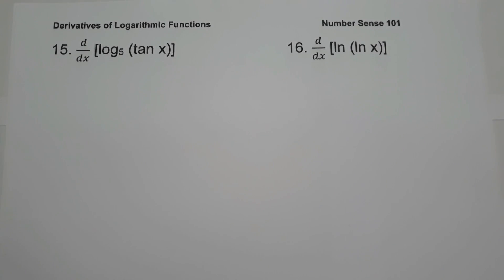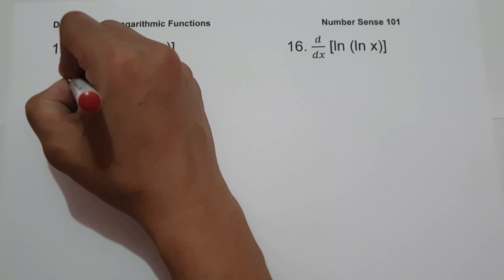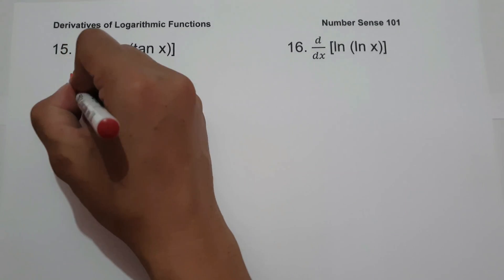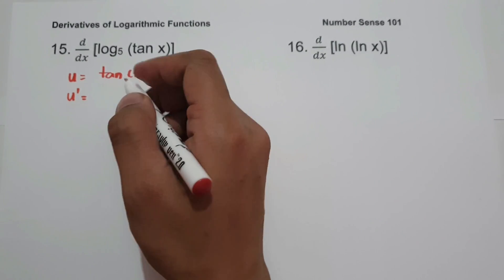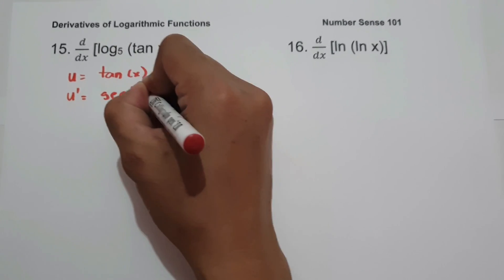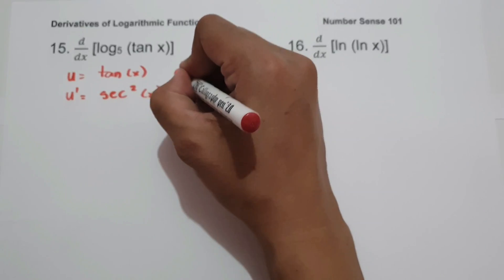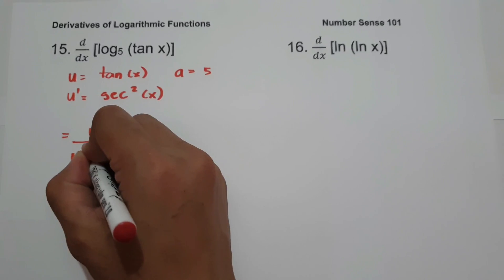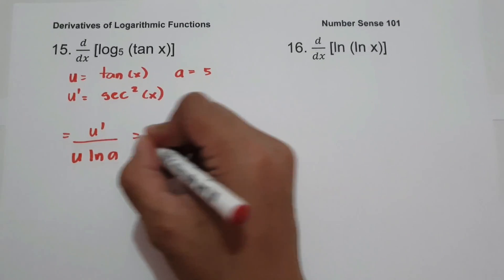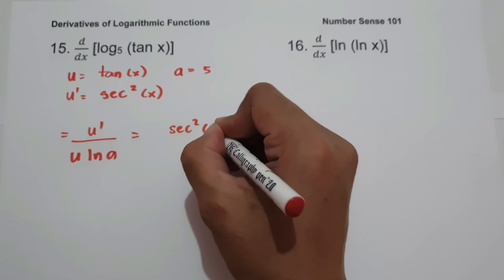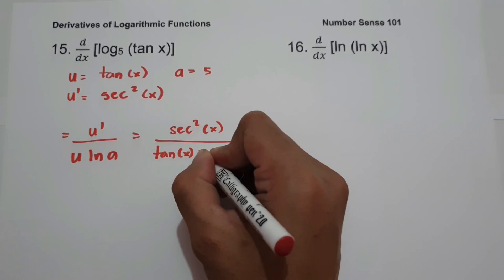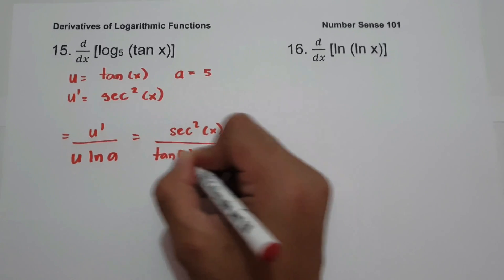Number fifteen: derivative of log base 5 of (tan x). Let u = tan x, so u' = sec²x, and a = 5. Applying the formula u' over (u · ln a) gives sec²x over (tan x · ln 5). This will be our answer.